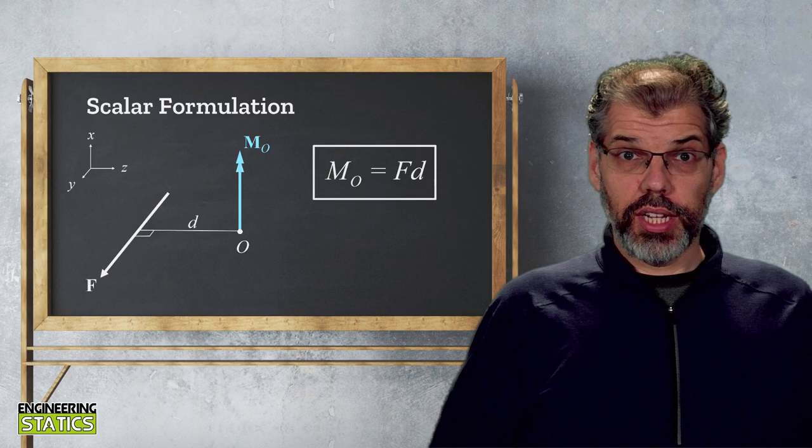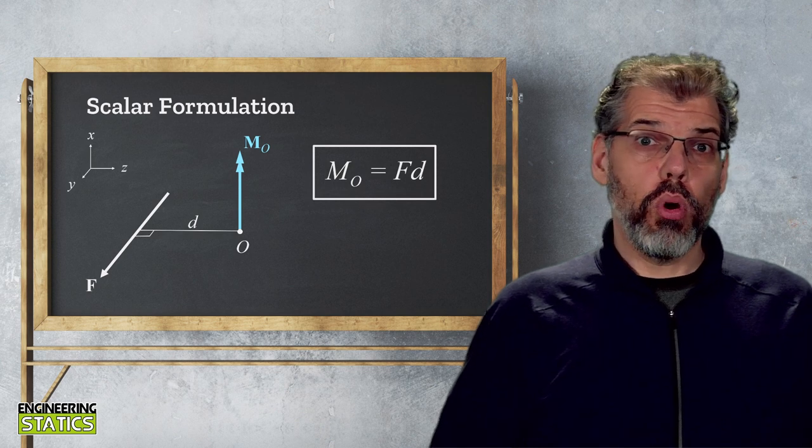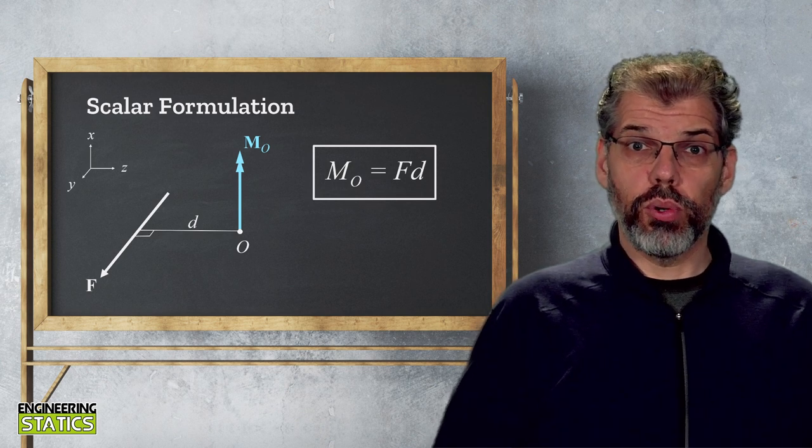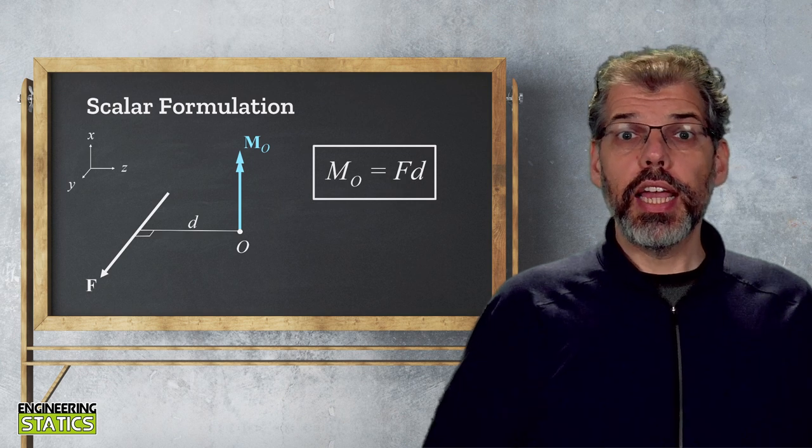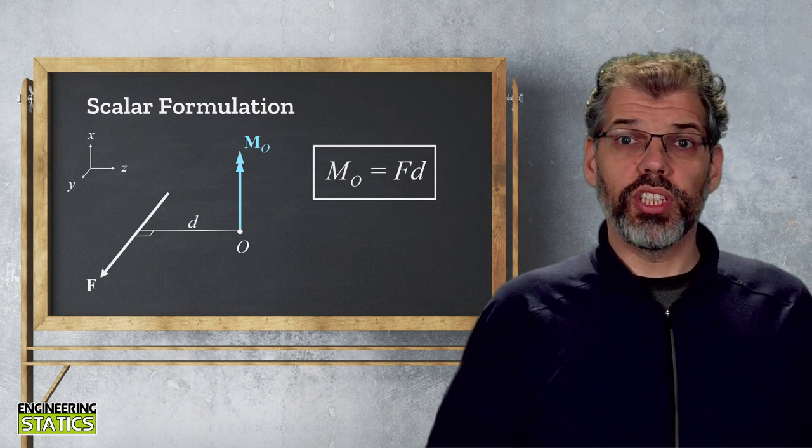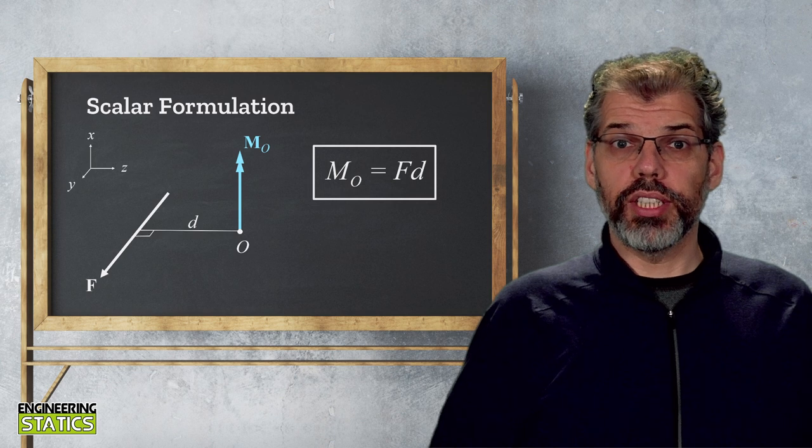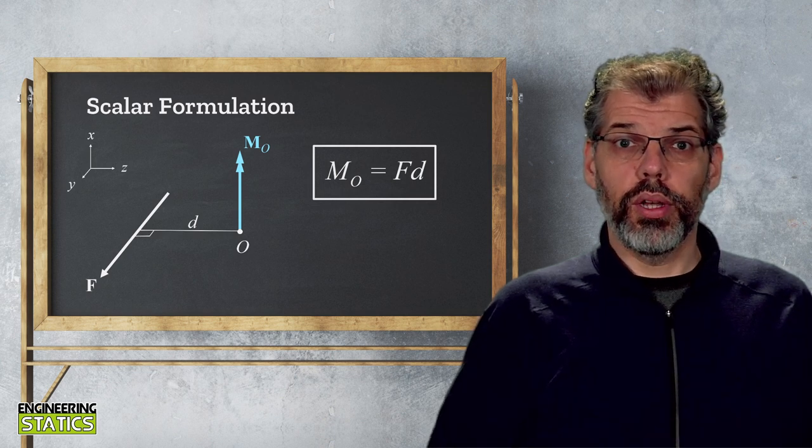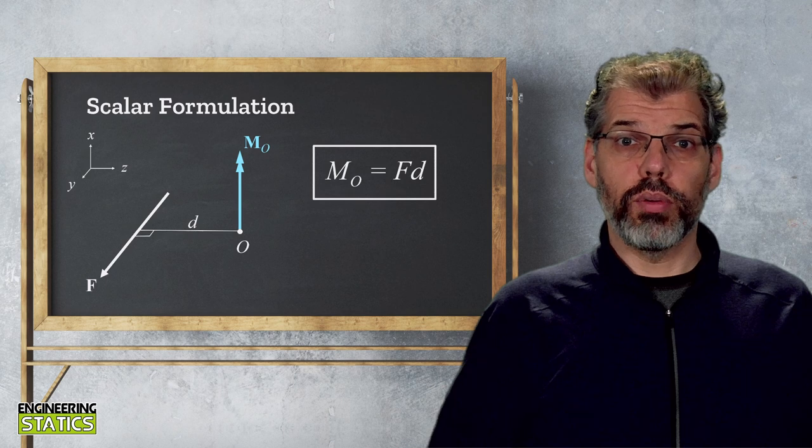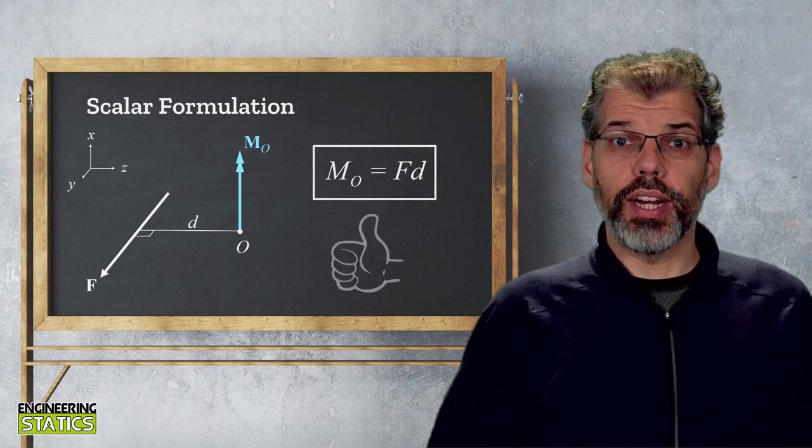Summarizing what we have seen thus far, we understand that a moment is a measure of the tendency of a force to cause rotation about a given point or axis. It can be quantified as the scalar product of the force f and the perpendicular distance d between the point of rotation and the force. Also, the direction of the moment can be visualized using the right hand rule.